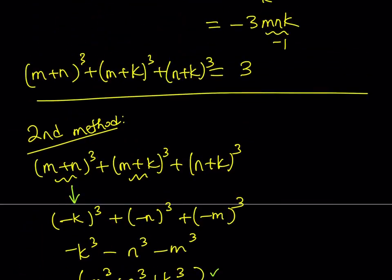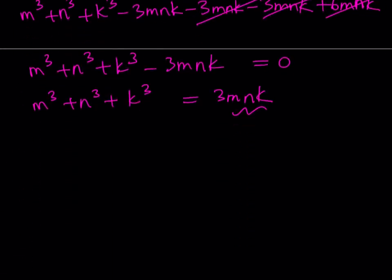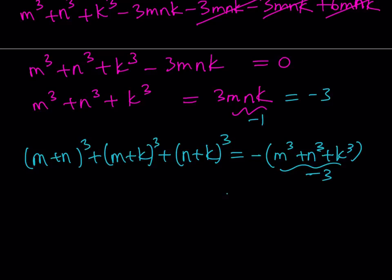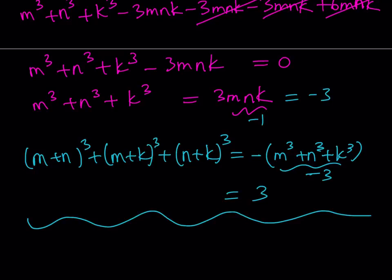Since mnk = −1, we get m³ + n³ + k³ = 3·(−1) = −3. But our original expression equals −(m³+n³+k³) = −(−3) = 3. So the answer is 3, confirming the result from Method 1. Thank you for watching — I'll see you tomorrow with another video. Until then, be safe, take care, and bye-bye.